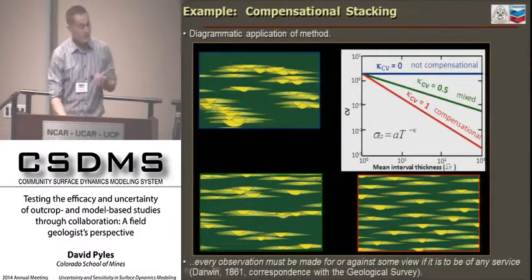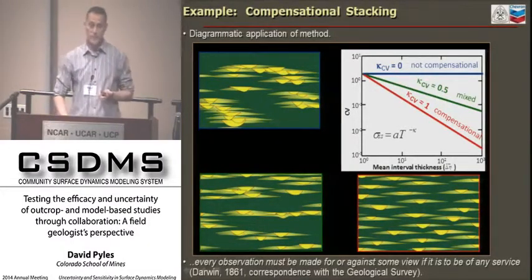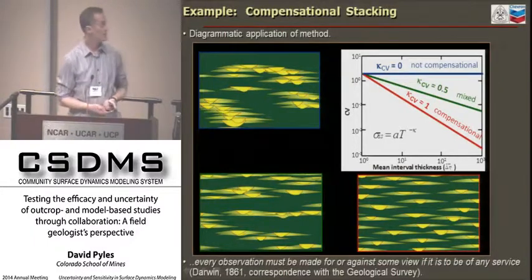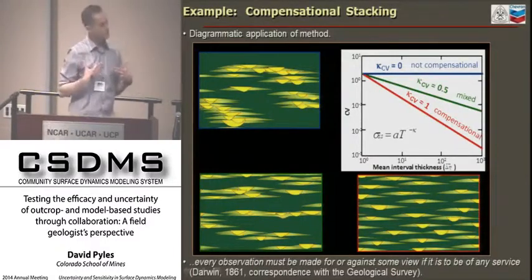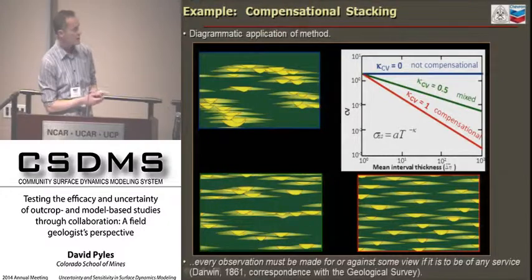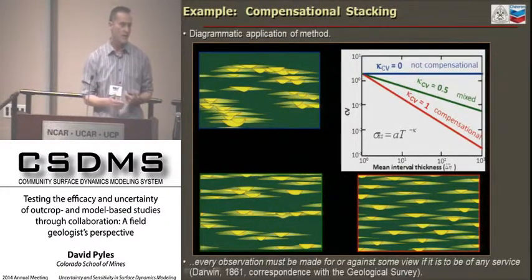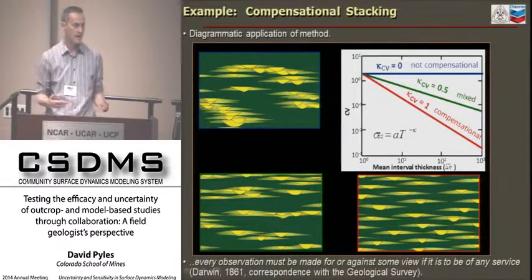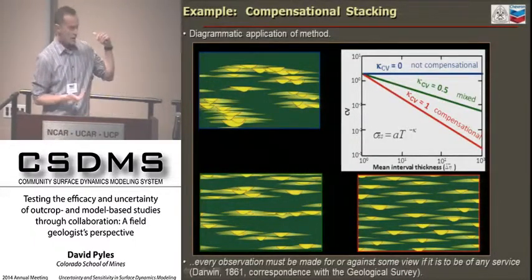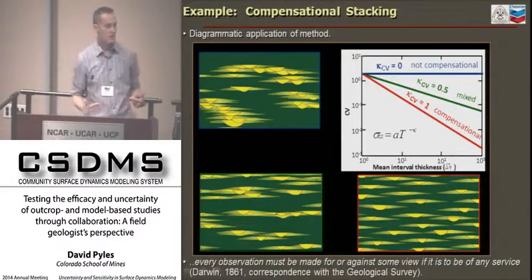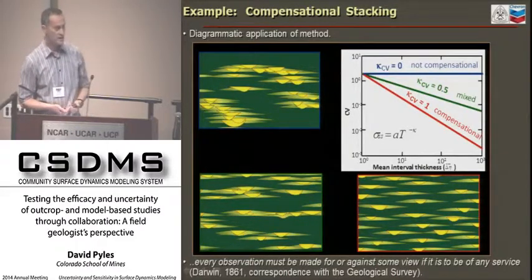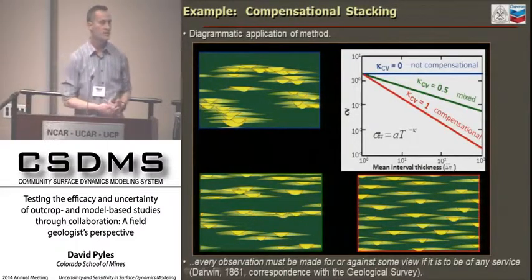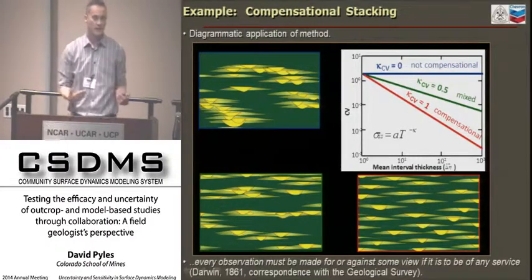One thing I want to give you some insight on in terms of how modeling and field geology work together is that there's a lot of insight that can be gained from modeling. I never would have thought of quantifying compensational stacking had I not read Kyle's article. Once I read it, it taught me that I need to start observing different things in the stratigraphy. This is why I cite Darwin's correspondence with the Geological Survey: 'Every observation must be made for or against some view if it is to be of service.' But if you don't have that perspective, how can you know to measure it?